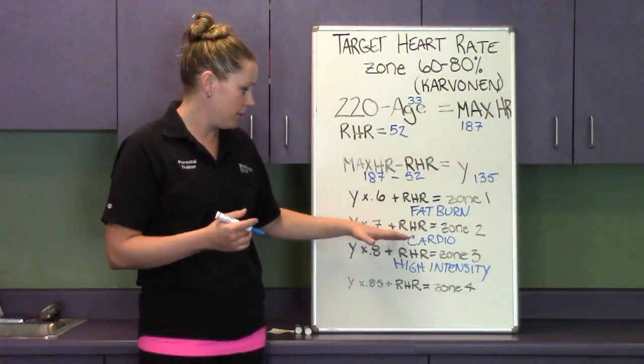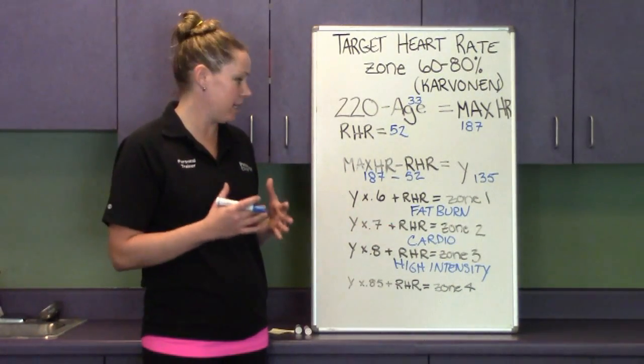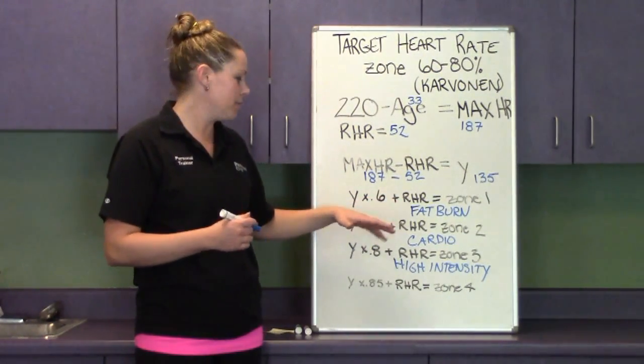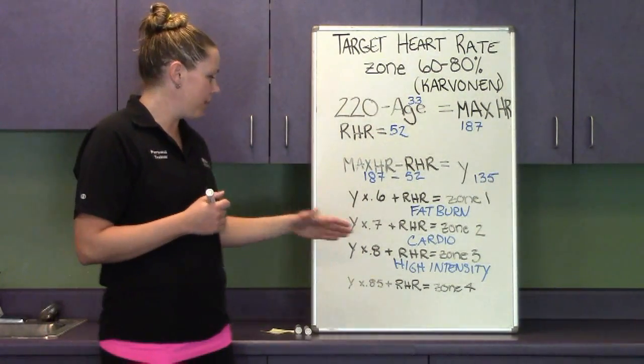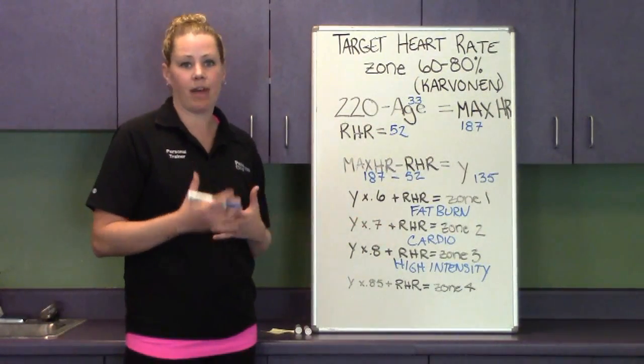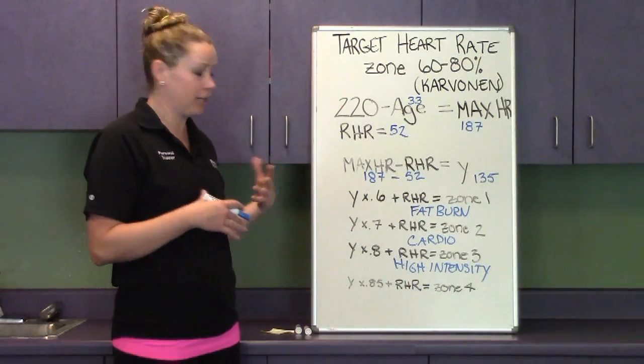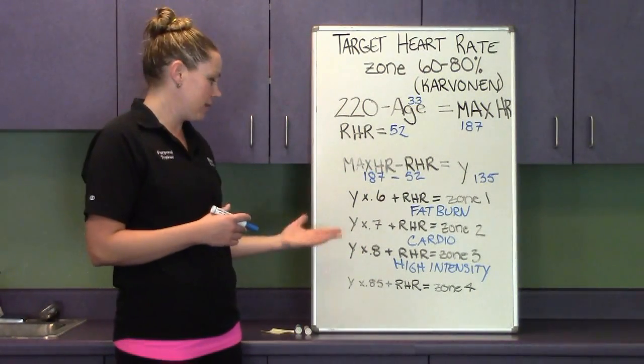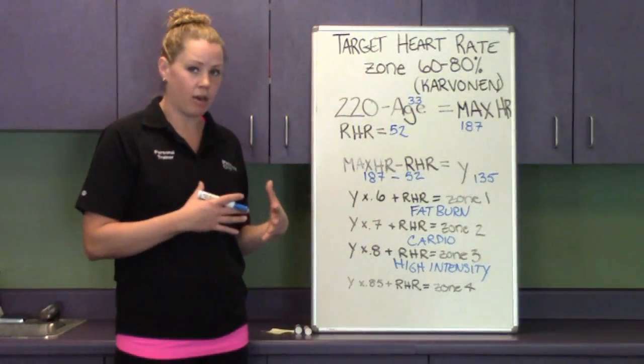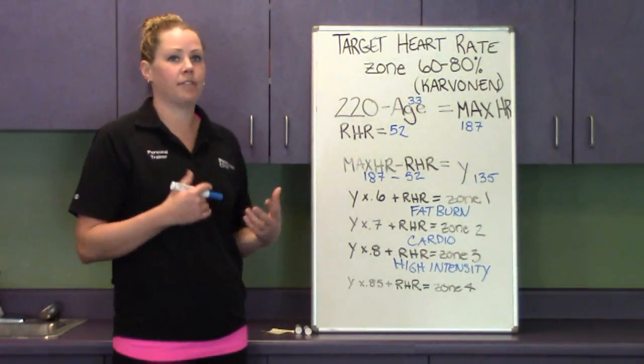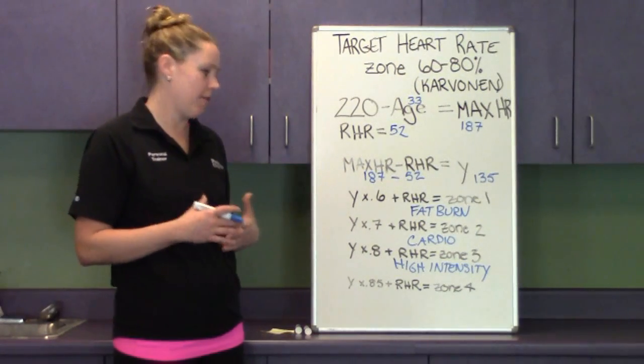Cardio zone, you get into other sources of energy as well. You're still going to burn fat, but you're also going to use your carb source to keep going. So people that are doing long distance events such as marathon running or even just a long run, a long time on the elliptical, you're going to make your way a little bit more into that cardio zone to train yourself to be stronger, faster, all that kind of stuff.